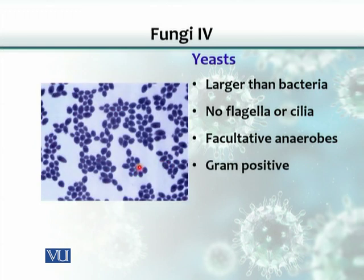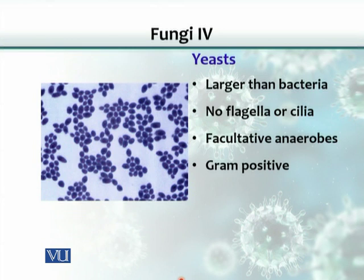Yeast cells are much larger in size compared with an average bacterium. When stained, they behave like gram-positive organisms. So if yeast cells are accidentally present in a bacterial culture on the same plate and you stain them, you would see large cells that appear blue — these are the yeast cells, and they are easy to recognize from their size. They are typically oval shaped and much larger than gram-positive bacteria.